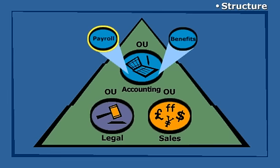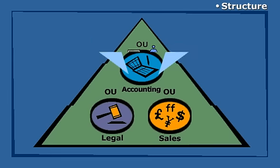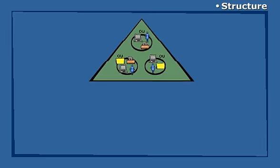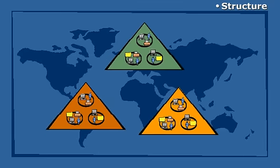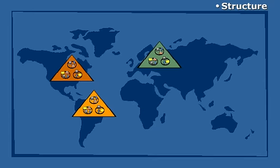Although OUs are useful for delegating administrative responsibility within a domain, multiple domains are useful for networks where administration is done by separate authorities, as in an international organization where resources may be maintained in different languages.